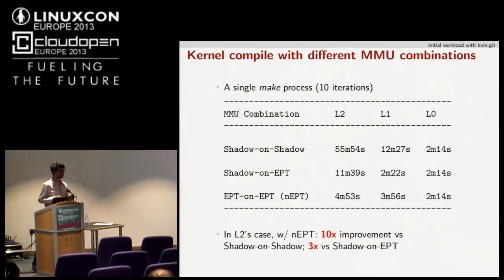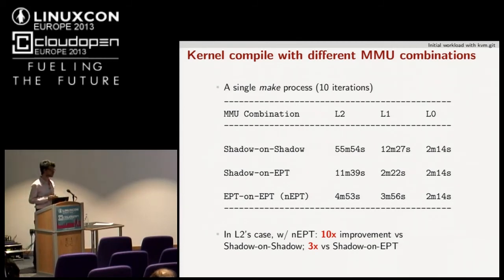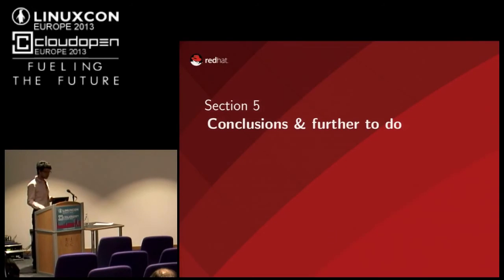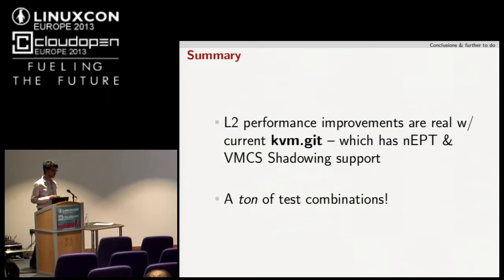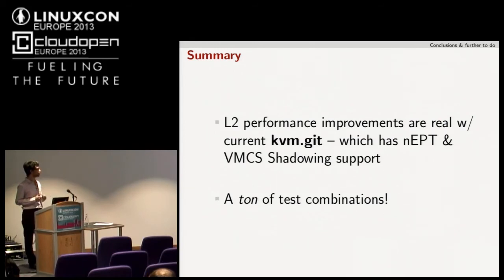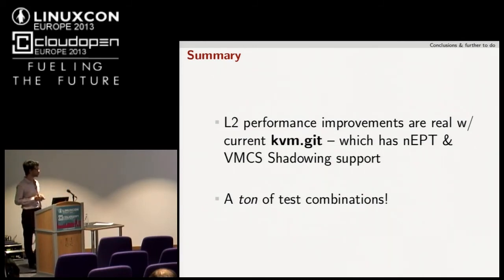With more virtual CPUs it worked consistently. With current KVM git you definitely see a very visible performance improvement. The current KVM git has patches for nested EPT, and VMCS shadowing support has been there for a couple of months, but nested EPT was only recently merged into the current KVM git.